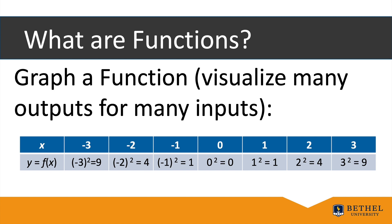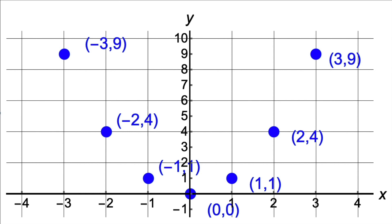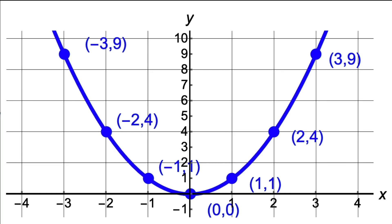When x is negative 3, the output is 9; when x is negative 2, the output is 4, and so on. We then plot these points in a Cartesian rectangular coordinate system and connect the dots with a smooth curve. The final picture shows the overall behavior of the function: as x increases, y decreases before increasing again, and the graph is shaped like a bowl — we say it's concave up.